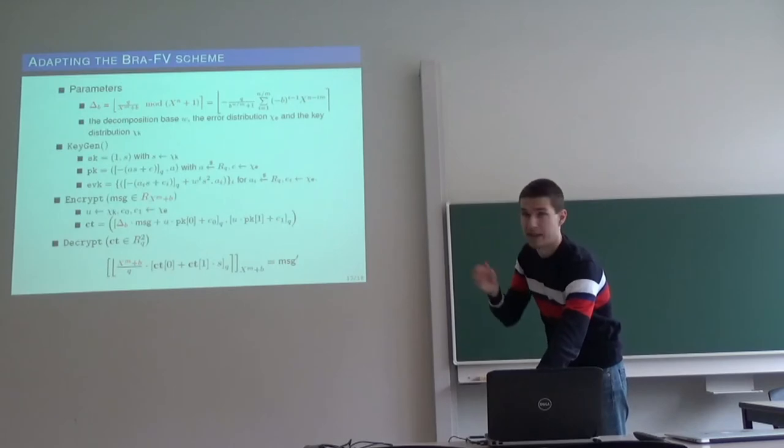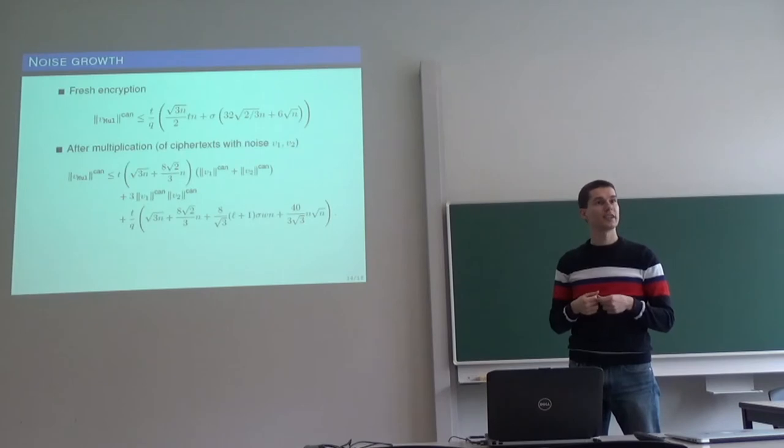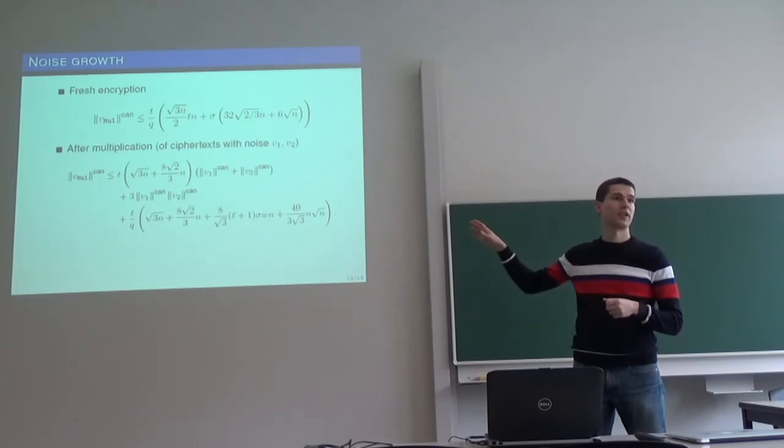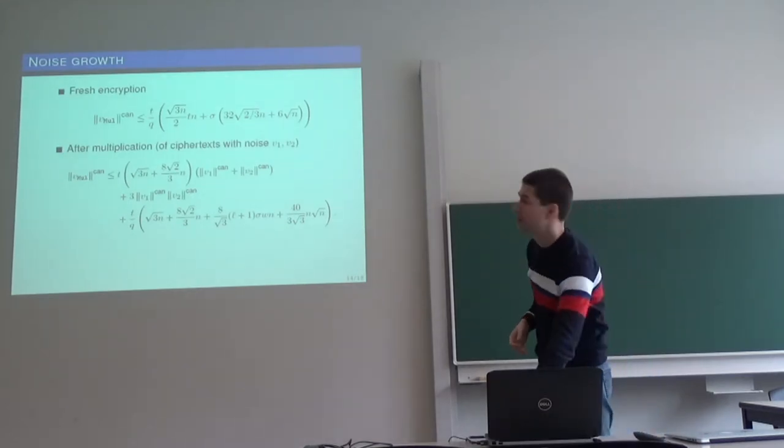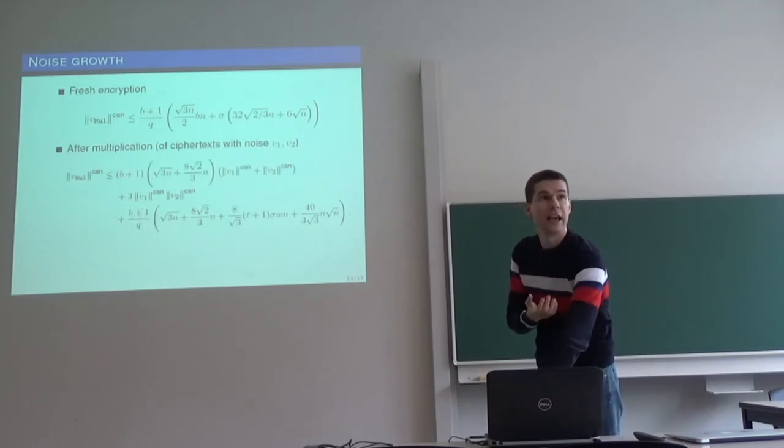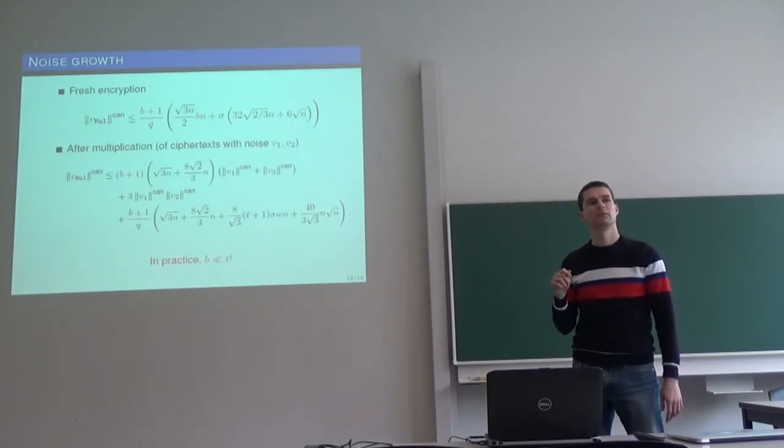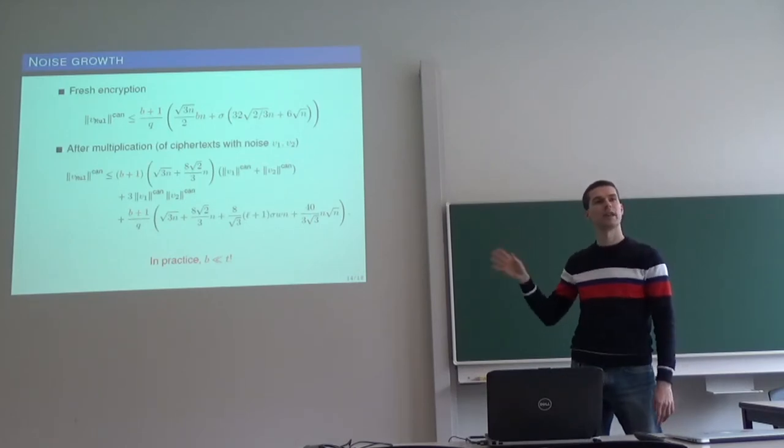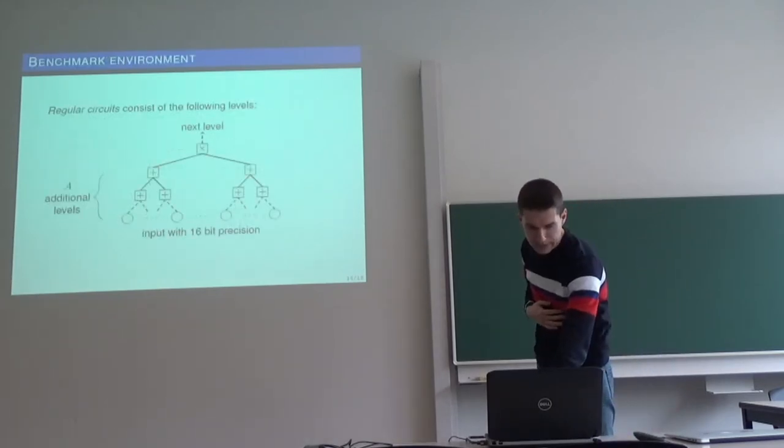So it defines the new scheme with the new plaintext space, and then if you want to estimate also the noise growth in the new scheme, we can take our estimations for the original BFV scheme, these huge formulas, and just substitute t by the one norm of x to the n plus b, which is b plus 1. And that's it. And you can immediately see that since b is usually much smaller than t for the same applications, so the noise growth in the new scheme with the new plaintext space will be better than for BFV.